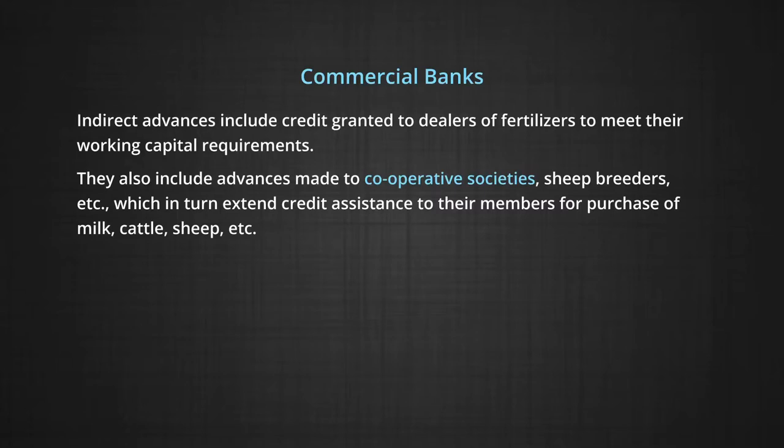Indirect advances also include advances made to sheep breeders, which in turn extend credit assistance to their members for purchase of milk, cattle, sheep, etc. The cost of operating agricultural advances is very high and huge losses are incurred in opening and operating rural branches. Regional managers are reluctant to provide agricultural advances, and central offices of banks are cut off from remote rural branches due to lack of communication and transport systems.